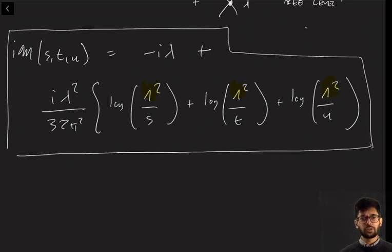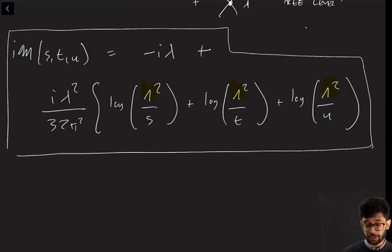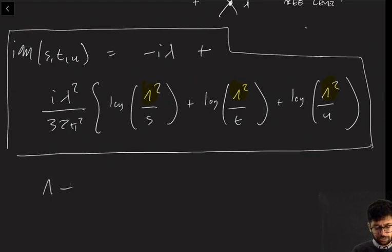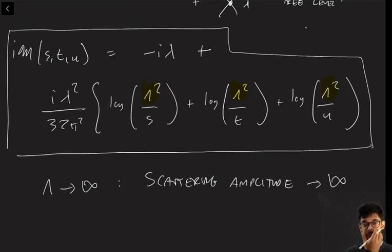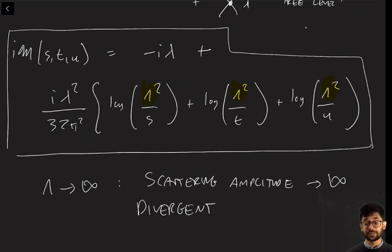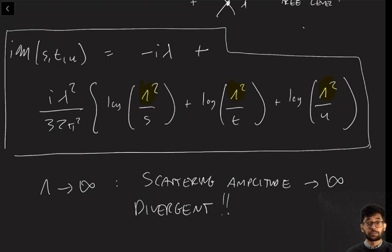Welcome back. We just calculated a scattering amplitude to one loop order, and we found that it depends on the parameter lambda, which is the cutoff in the momentum integral. Since it's a cutoff, we should take lambda to infinity. But that means the scattering amplitude for two phi particles goes to infinity — it is divergent. This is very problematic because a scattering amplitude is a probability, and it makes no sense for a probability to be infinity.